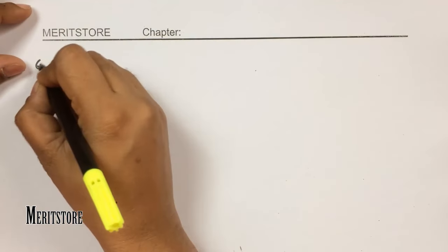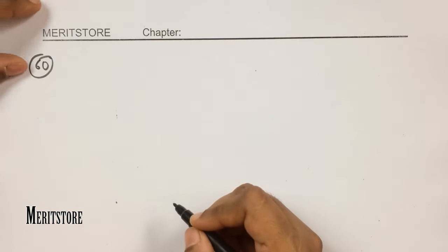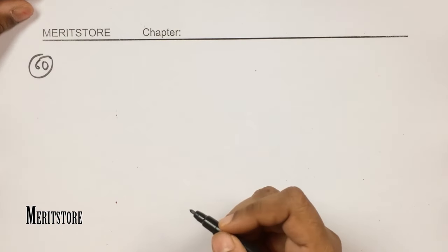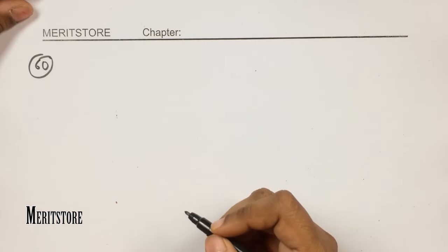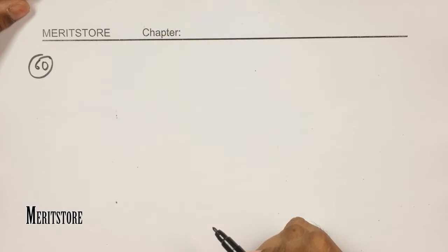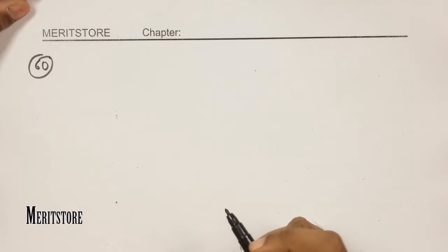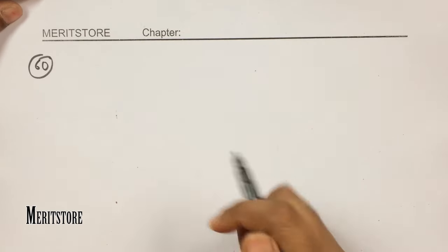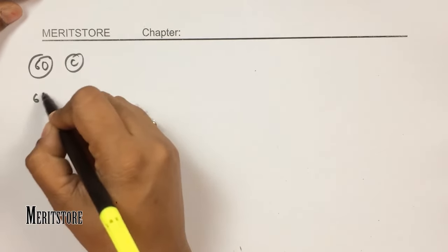Question number 60: which statement is not true with respect to beryllium chemistry? Beryllium is amphoteric in nature due to its diagonal relationship with aluminium — correct. It forms the unusual carbide, beryllium carbide — also correct. However, beryllium hydroxide is basic in nature is incorrect, because beryllium hydroxide actually shows amphoteric nature. Therefore option C is the incorrect statement.